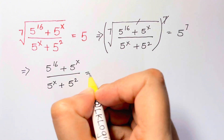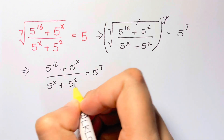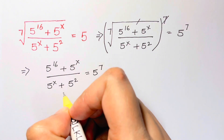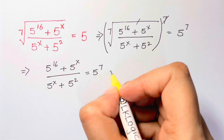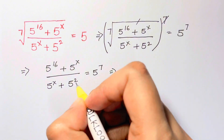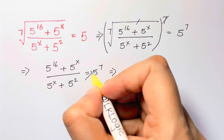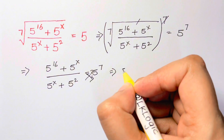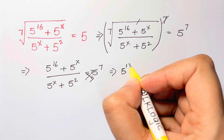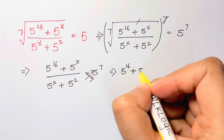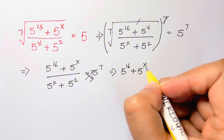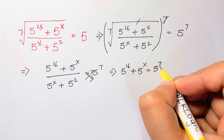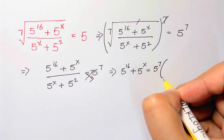This equals 5 to the 7th. Now this is like a single fraction. What we can do in the next step is cross multiply. So we have 5 to the 16 plus 5 to the x times 5 to the x, which is equal to 5 to the 7th times the quantity 5 to the x plus 5 squared.